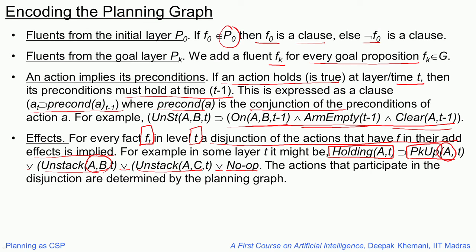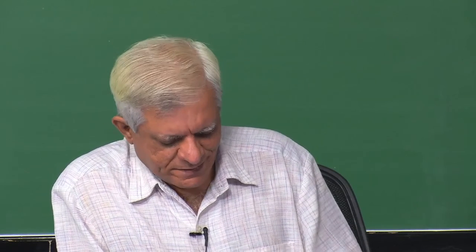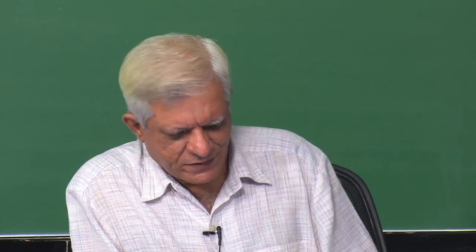The mutex relations handle the backward phase of the planning graph — of all actions that could have achieved holding a, in the final plan only one will exist, and you choose the one consistent with the rest. Actions that are mutex directly define clauses in SAT: you simply say one of them must be false — for example, you can either pick up c or unstack a from b, but not both at the same time. With this, we have seen two ways of converting a planning problem into a SAT problem.